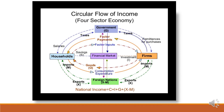We can understand this concept with the given figure. In this figure, there are four sectors which are moving around the financial sector. These four sectors are: household sector, government sector, firms (producer sector), and foreign nation (rest of world sector). Each and every sector shows an interdependence tendency with each other.